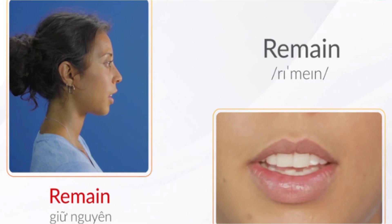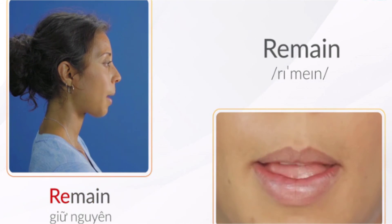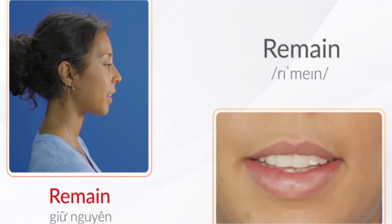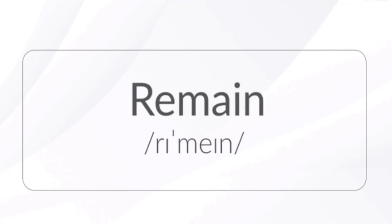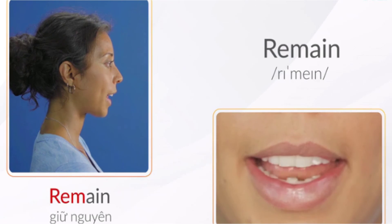Remain. Các bạn lưu ý từ này có 2 âm tiết, trọng âm rơi vào âm tiết thứ 2 các bạn nhé. Từ này có chữ nguyên âm A, các bạn lưu ý đọc âm E nối với âm I, âm E dài hơn âm I một chút là được nhé.